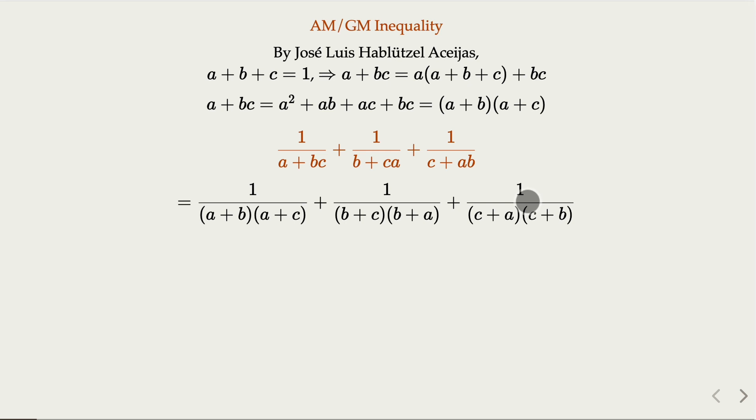When you add everything up, the numerator is going to be twice of a plus b plus c. Of course, a plus b plus c equal to 1. So here, you get 2 here, numerator. And here is the denominator.